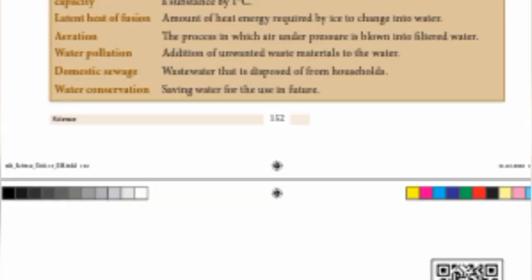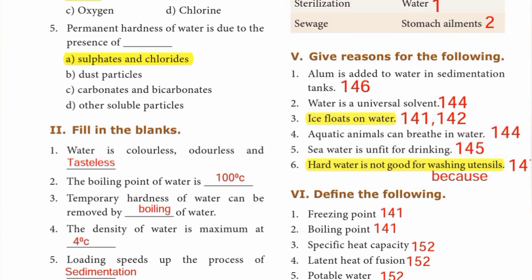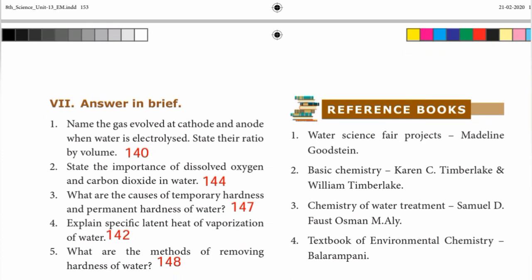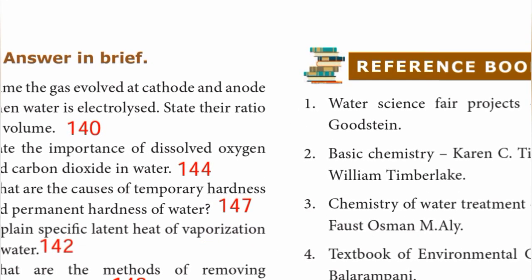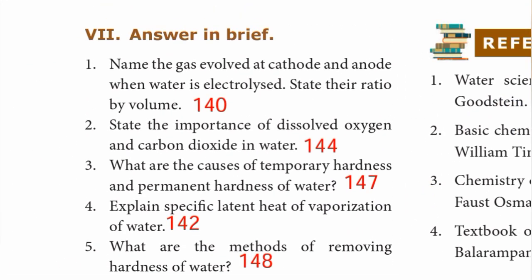Answer briefly from last video. Define the following, page number 154, Roman numeral 7, answer in brief. First one: name the gas evolved at cathode and anode when water is electrolyzed. State the ratio by volume. Page number 140.